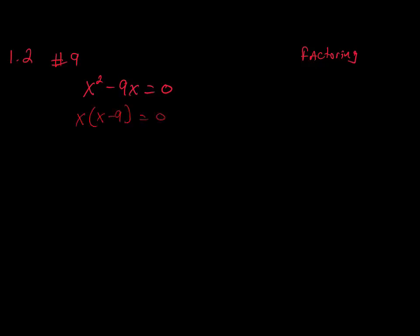Now we have x times x minus 9 is equal to 0. Using the zero factor theorem, we're going to set each of these equal to 0 and find the solutions. The first one is x is equal to 0, and then the second one becomes x is equal to 9. So the solutions for this particular quadratic equation are x equals 0 and x equals 9.